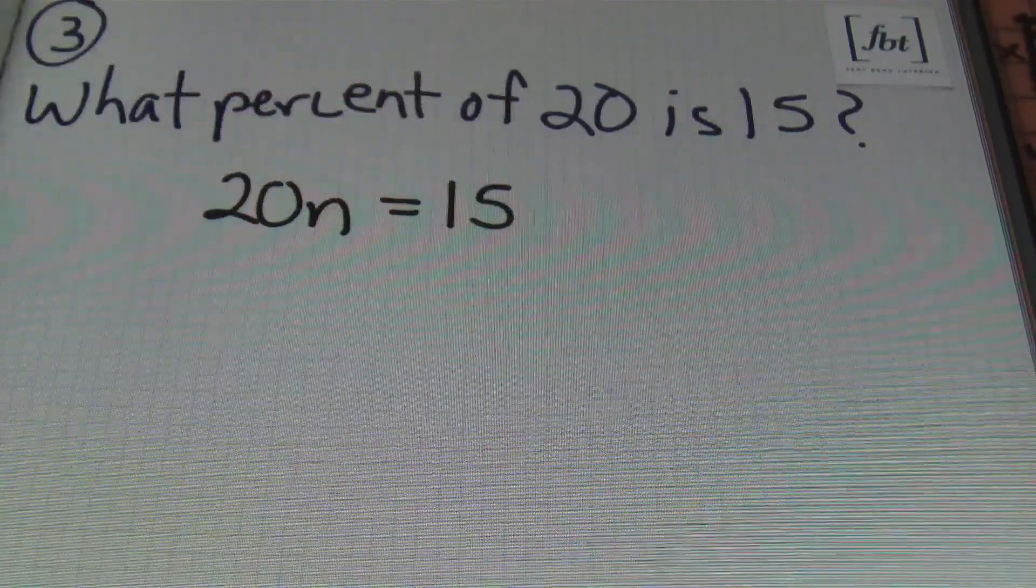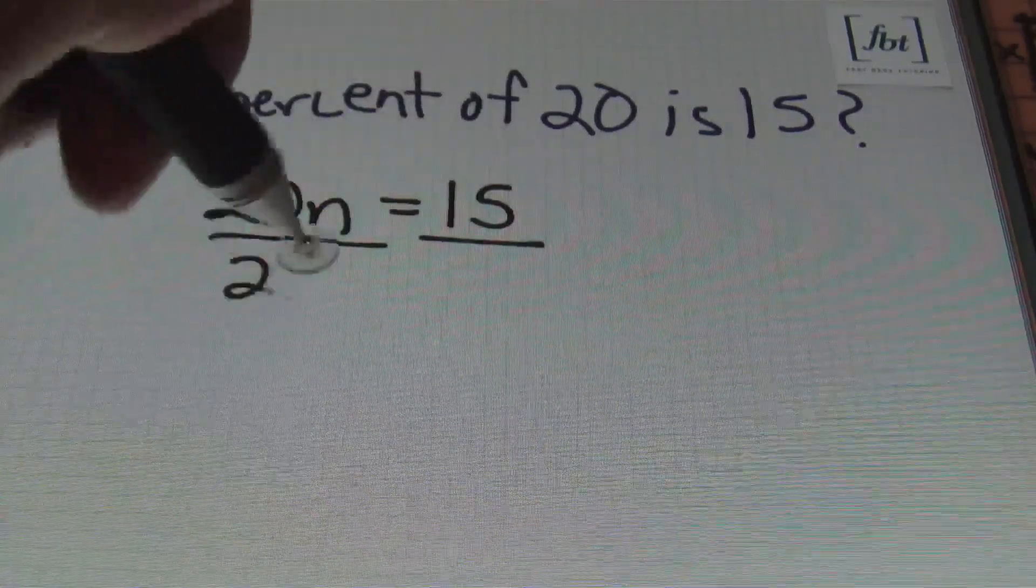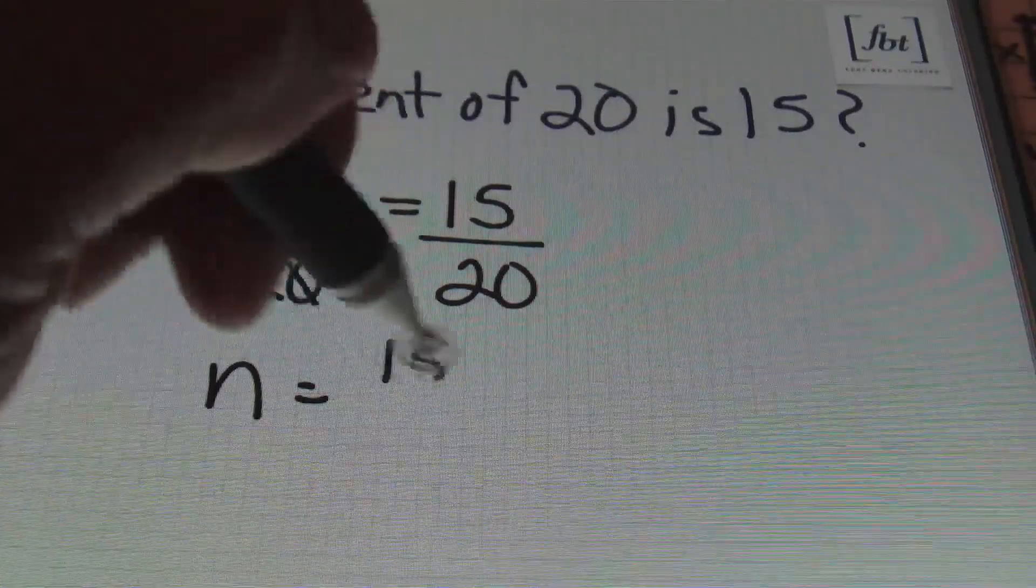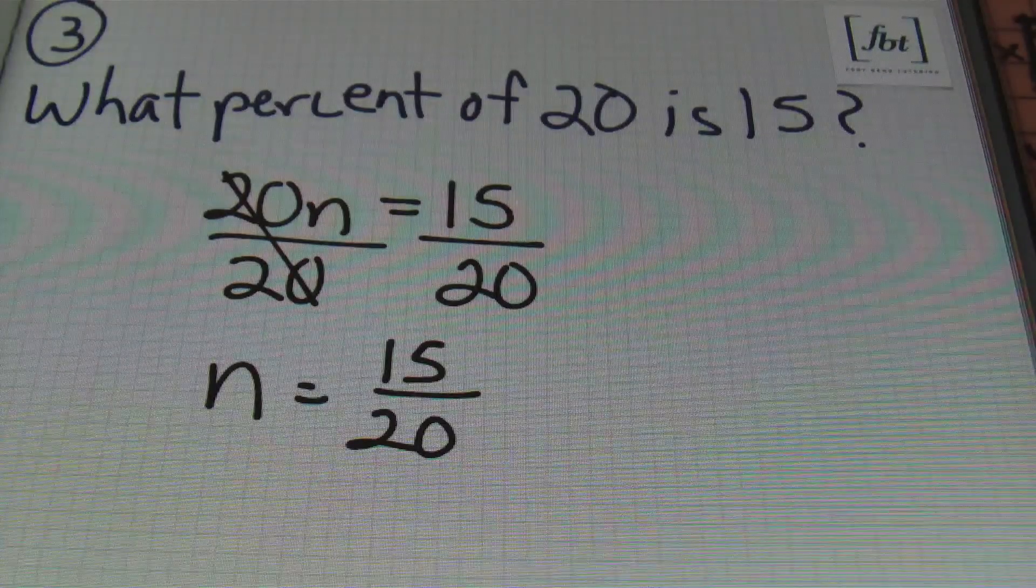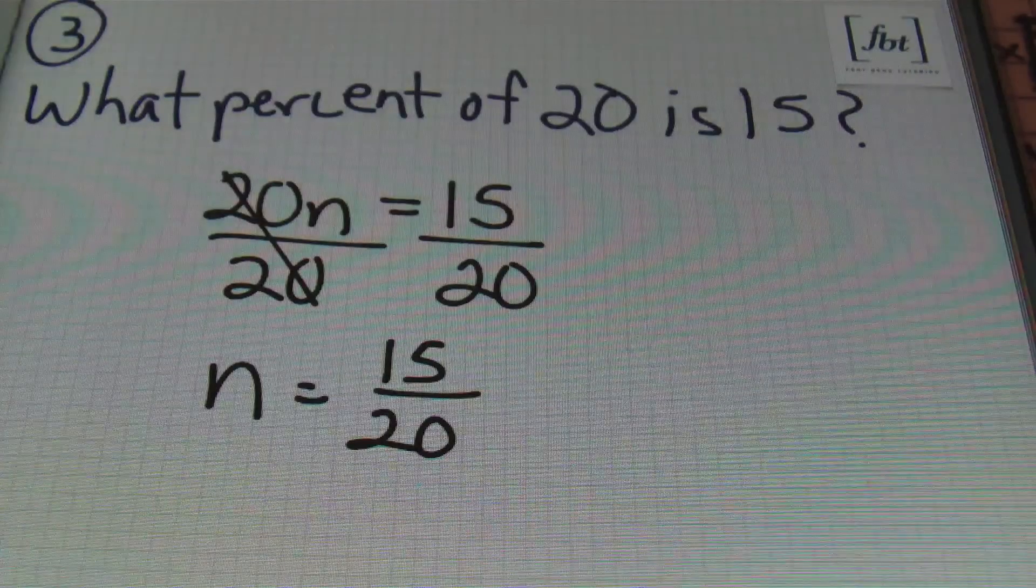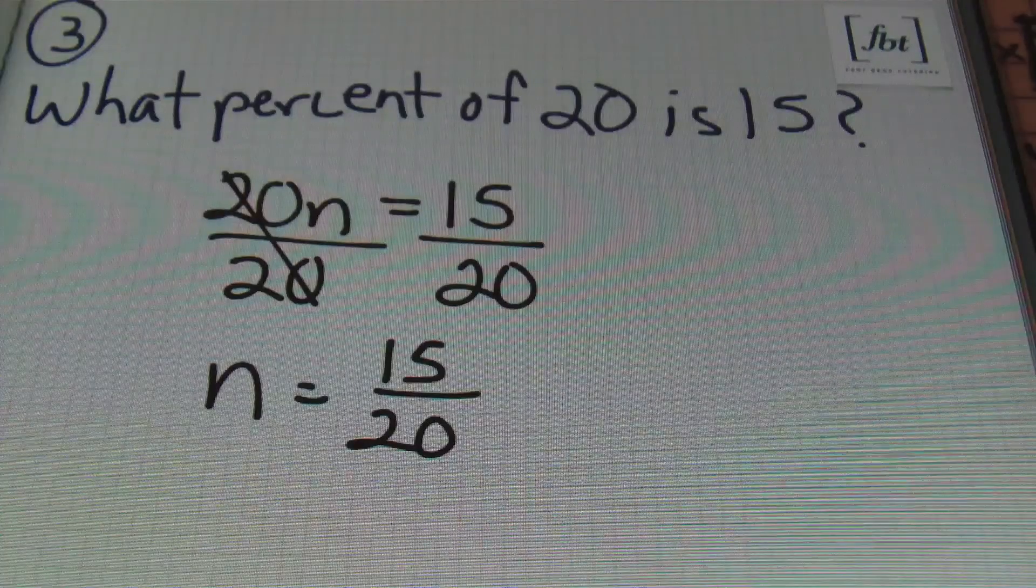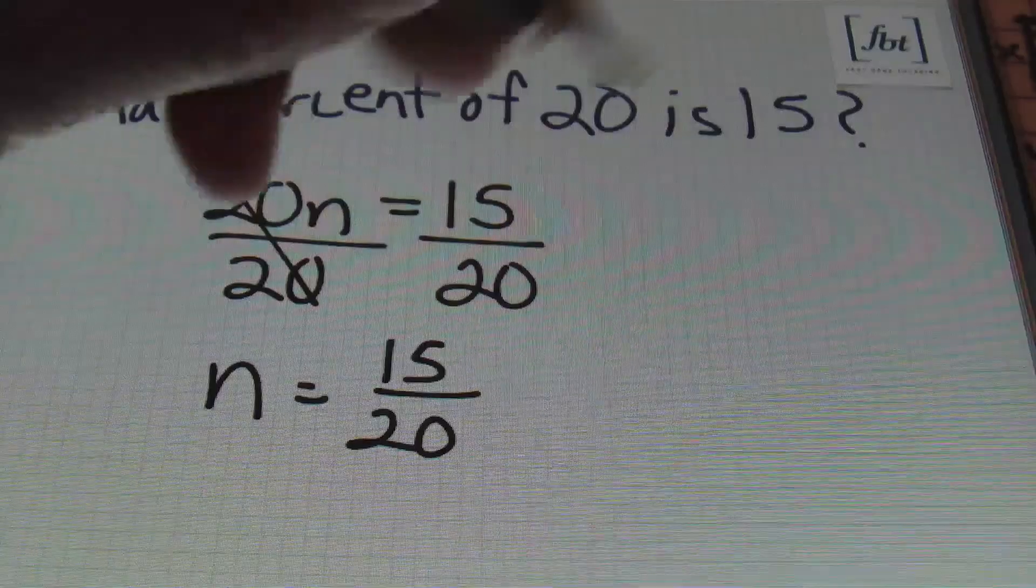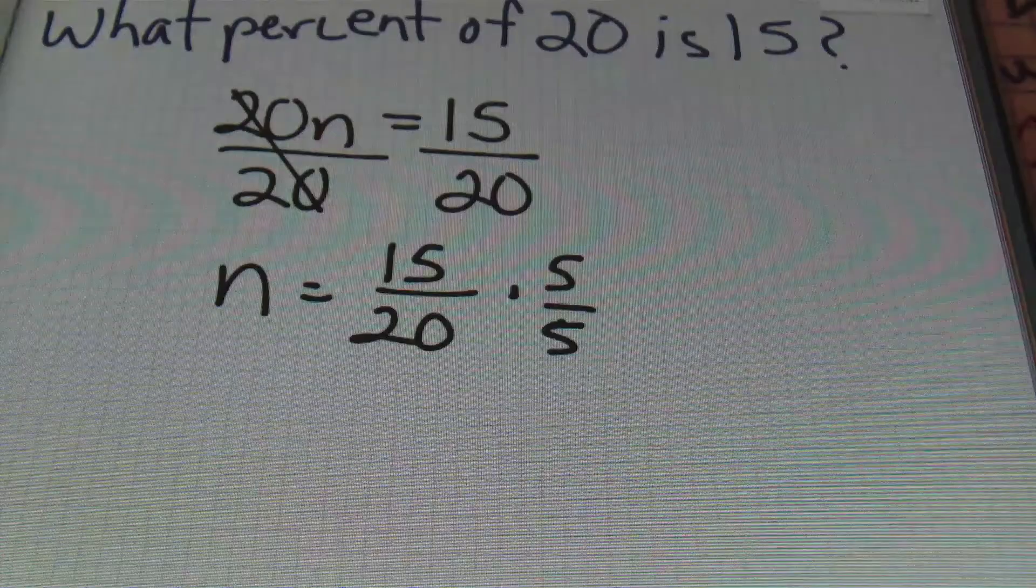So multiplying a variable times a number, you always put the number first. So this time I'm going to use n as my variable, so I'm going to put 20n. The equal sign will represent the word 'is', and I'll bring down the number 15. From there, I'll be dividing both sides by 20. So I have n equals 15/20. But remember, we're solving for a percent, and every percent is over 100. So you want to convert this 15/20 into percent notation.